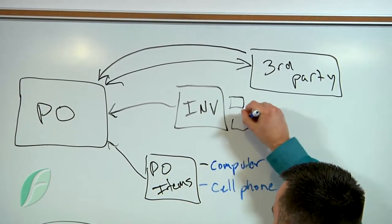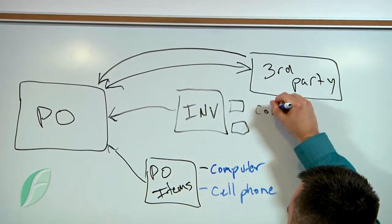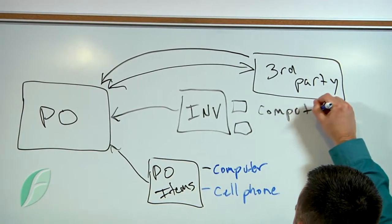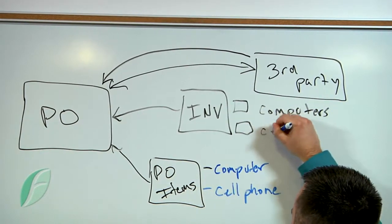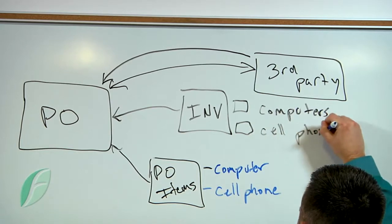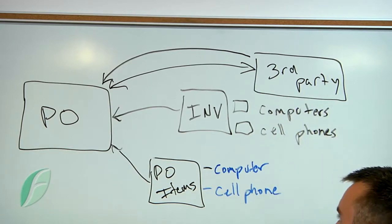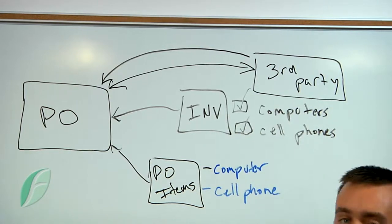So here we can say, within our invoice, we need this many computers and cell phones, and once we've received those, this invoice record is going to check those off.